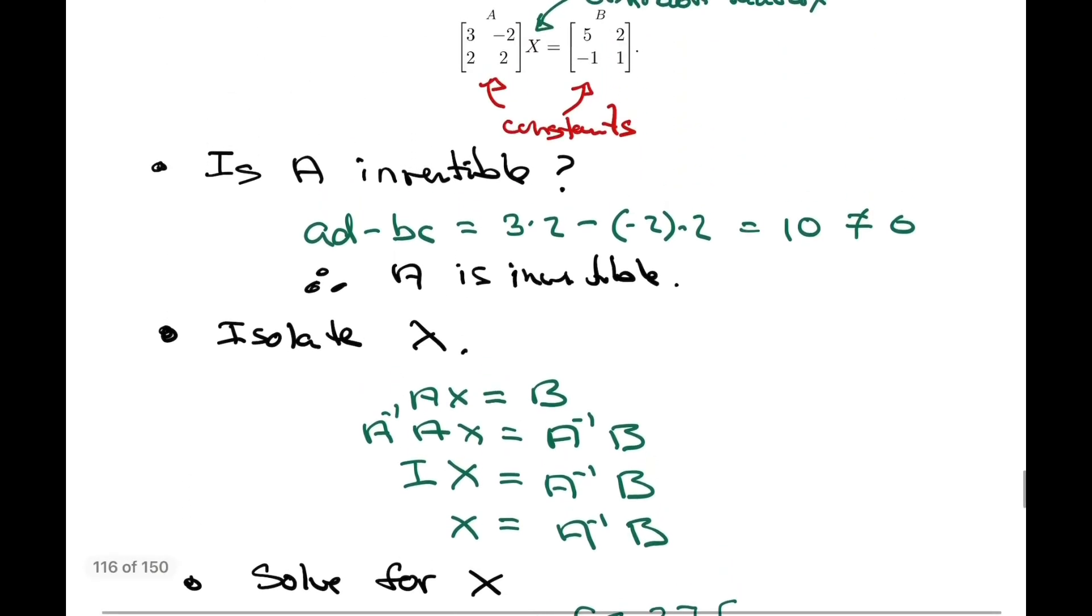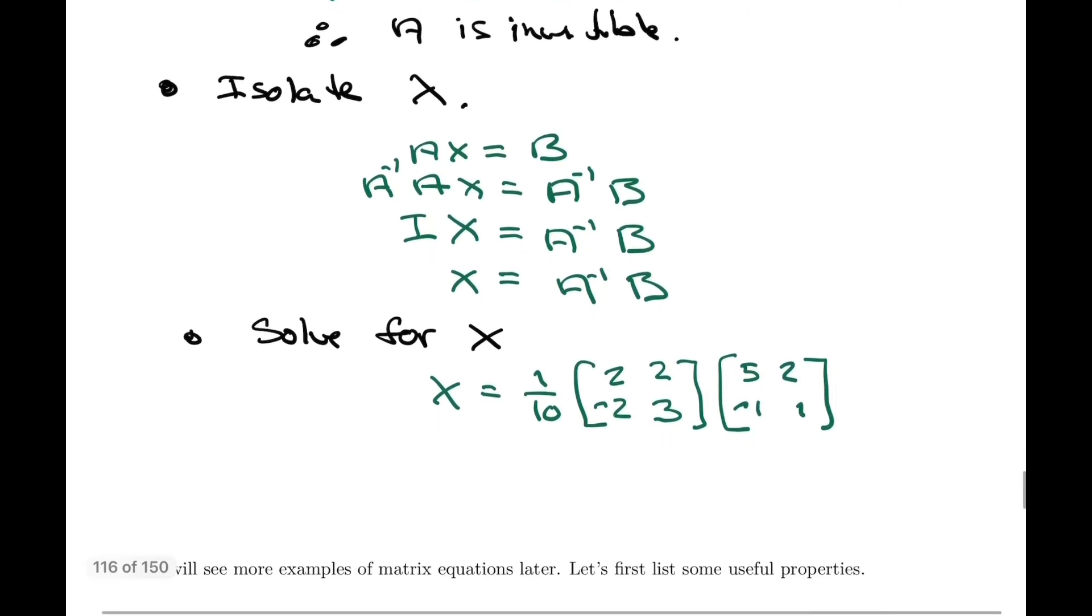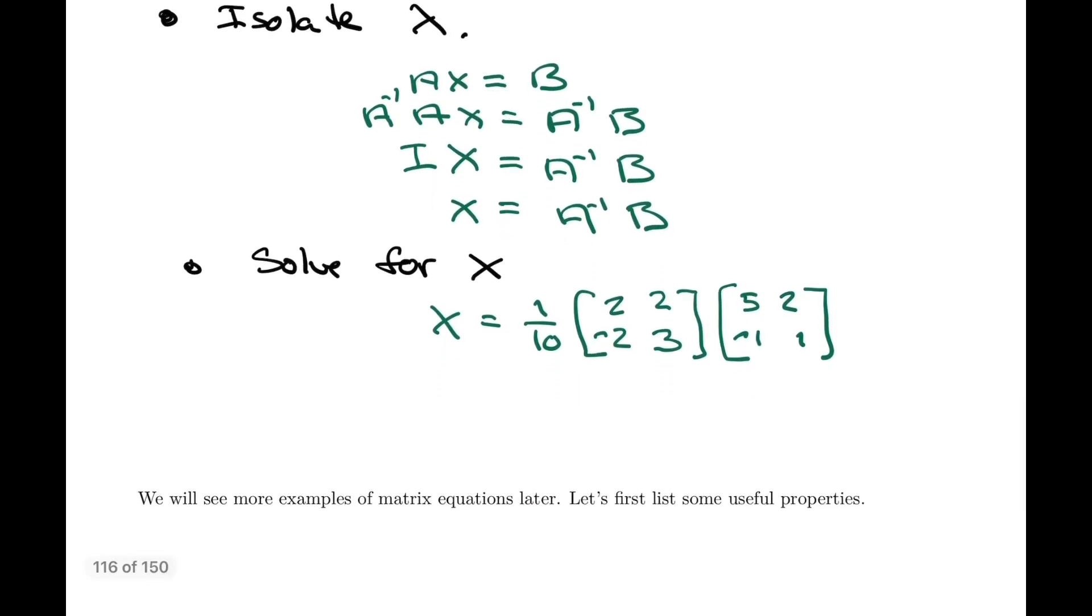Now we multiply A inverse times the matrix B which is [5, 2; -1, 1]. A tip here: resist the temptation to multiply in the 1/10th. Carry out the matrix multiplication first, then we'll multiply in the 1/10th. By now we're pretty good at that. First row, first column.